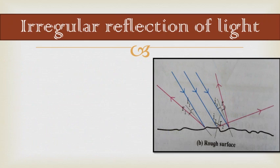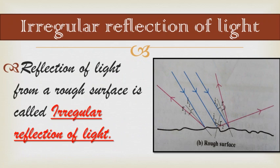Next is irregular reflection of light. The reflection of light from a rough surface is called irregular reflection of light — exactly opposite to regular reflection. On a rough surface, the reflected rays are not parallel to each other.